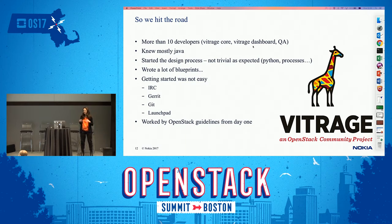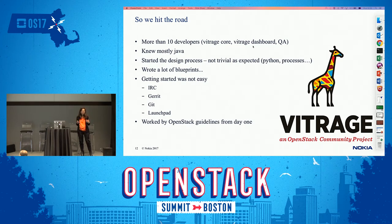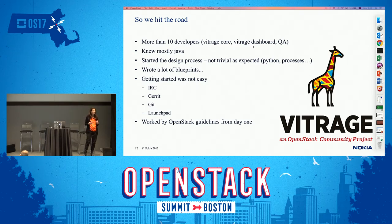In the beginning we wrote a lot of blueprints — that's the OpenStack way for design documents. We wanted to write blueprints for the design, but we also hoped that other people might review our blueprints, comment, and improve them.